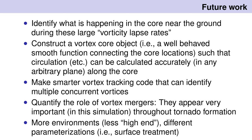For future work, I want to identify what's going on near the ground during these vorticity lapse rates. I want to construct vortex core objects to define vortices so I can calculate circulation and other things along the vortex without having to make the vertical vortex assumption. I also want to make smarter vortex tracking code to identify multiple vortices, and quantify the role of vortex mergers, which appear super important in this simulation. It may be that they're very important in the atmosphere — you can additively combine vorticity, potentially doubling it just by bringing two vortices together. It'd be interesting to compare how much stretching is required to achieve what a merger does.